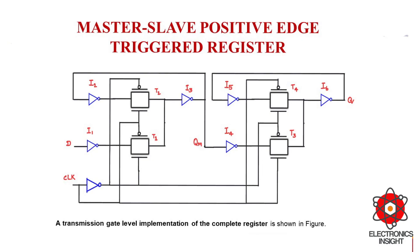Similarly, for the slave stage — which is a positive latch — when clock is 0, this clock 0 signal is fed to the PMOS of T4 and clock bar equal to 1 is fed to the NMOS of T4. Therefore T4 turns on in the slave stage and T3 turns off. When T4 turns on, the input data remains stable at the output for the entire duration of the clock signal, and hence the slave stage implemented using a positive latch is going to be in hold mode.